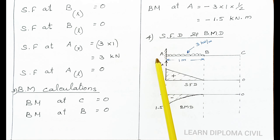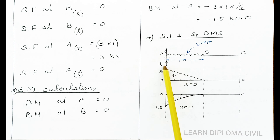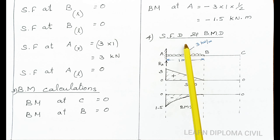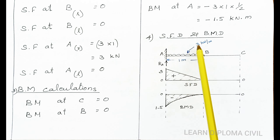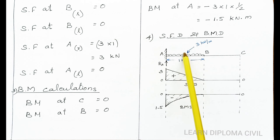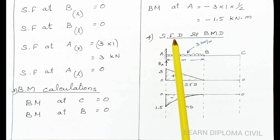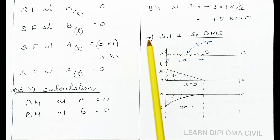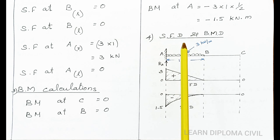For shear force at A, consider the section right side. Upward reaction R_A is 3 kN. Downward UDL is 3 kN/m into 1 meter, which is 3 kN. Therefore 3 minus 3 equals 0. Calculate the section right side result: shear force at left of A is 0.